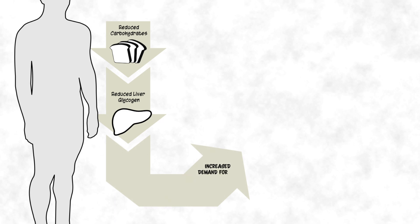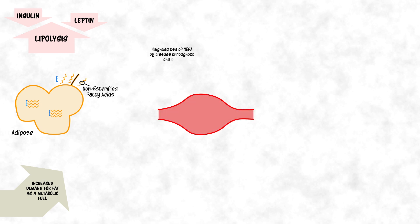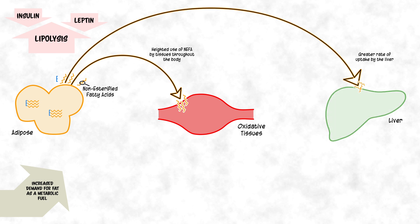In the lipid energy model, reduction in dietary carbohydrates and depletion of liver glycogen results in a greater demand for fat as a metabolic fuel. This brings about a number of hormonal changes, such as reduced insulin and leptin, which in turn triggers an increase in lipolysis and release of non-esterified fatty acids into the bloodstream. In addition to heightened use of these fatty acids by tissues throughout the body, there is a greater rate of uptake by the liver.